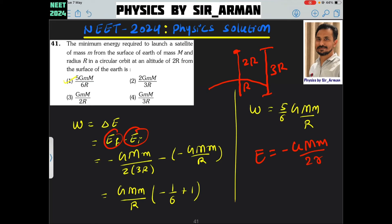This is GMm by 2, and what is at the final position? Its height from the center of the earth is 3R. So instead of small r, we are placing here 3R. So here it is 3R.